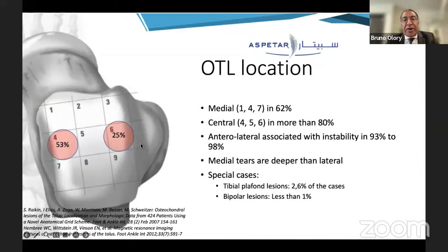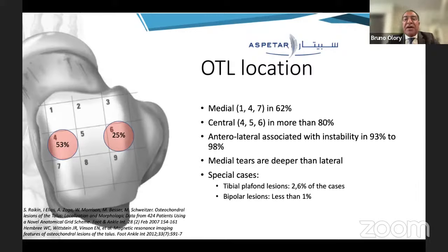An interesting study showed that medial lesions in zones 1, 4, and 7 accounted for more than 60% of cases. Lesions were in more than 80% of cases central, in zones 4, 5, and 6. Anterolateral lesions were very often associated with ankle instability, present in 93% of cases. Medial lesions are much deeper and more extended than lateral lesions. More than 50% of lesions are in zone 4 and 25% in zone 6.